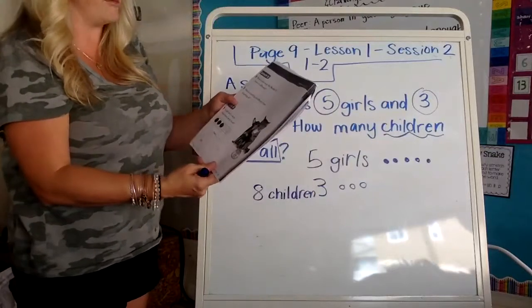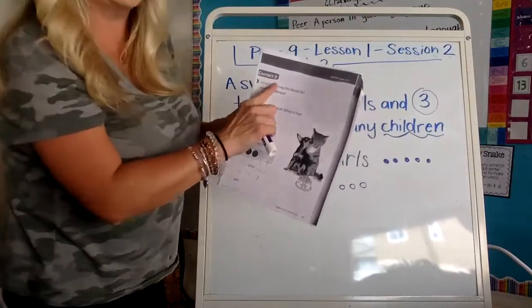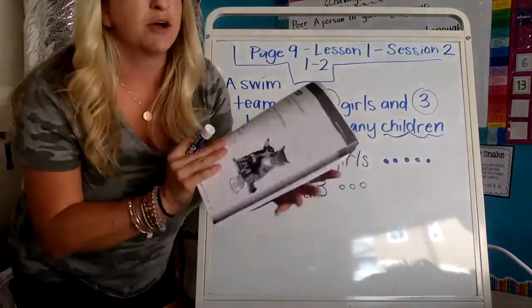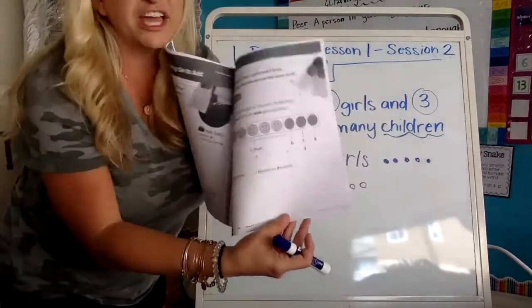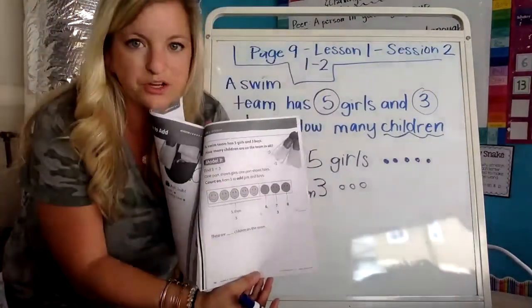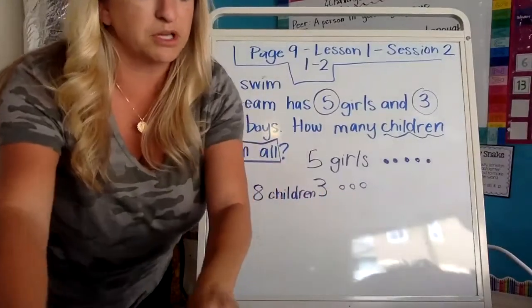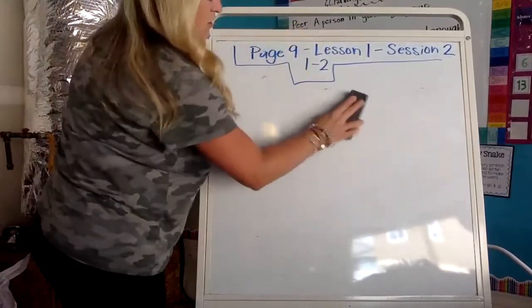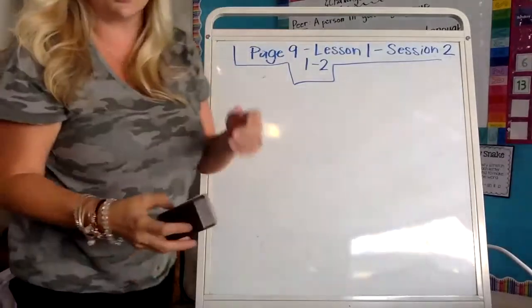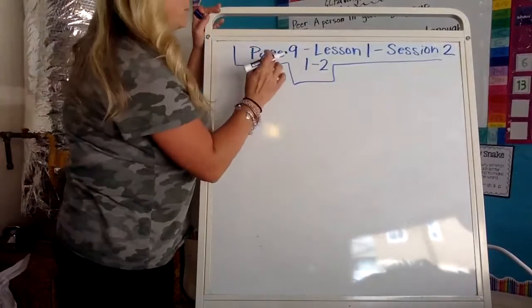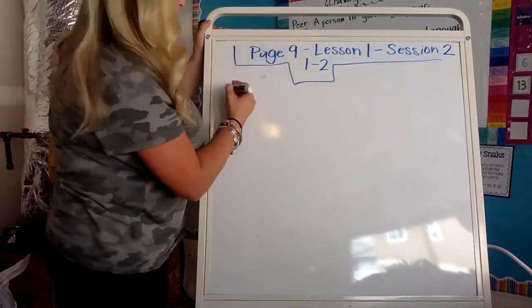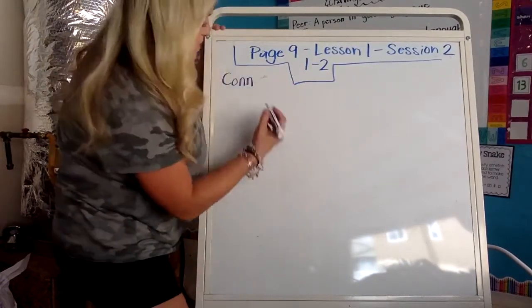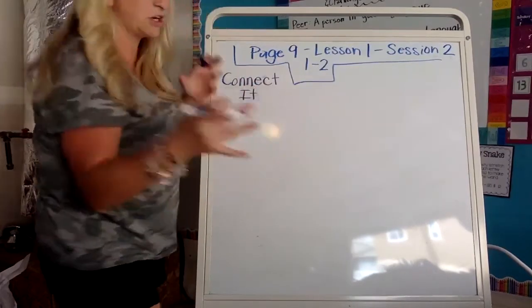Now on page 11, we're going to, at the top, it says connect it. So we're going to connect what we did on our own independently on the very first page of this lesson. We're going to connect it to what they showed us. We're going to put it all together into like a nice pretty package. So I'm going to go in and I'm going to erase this so I can show you what all I have to do for page number 11.